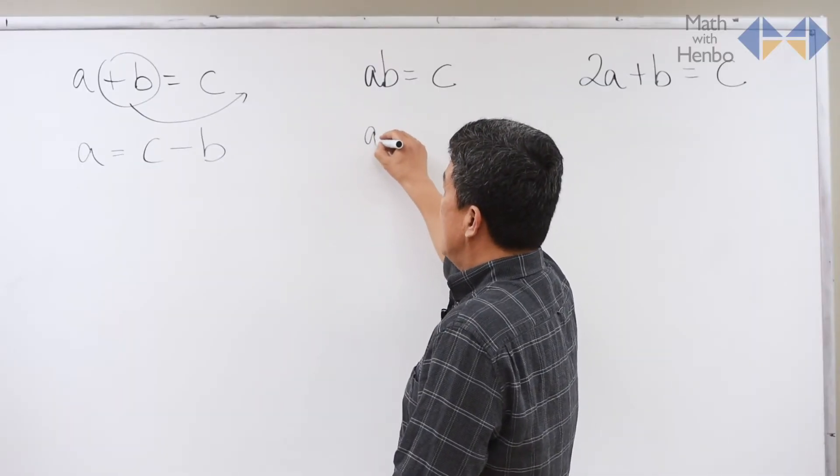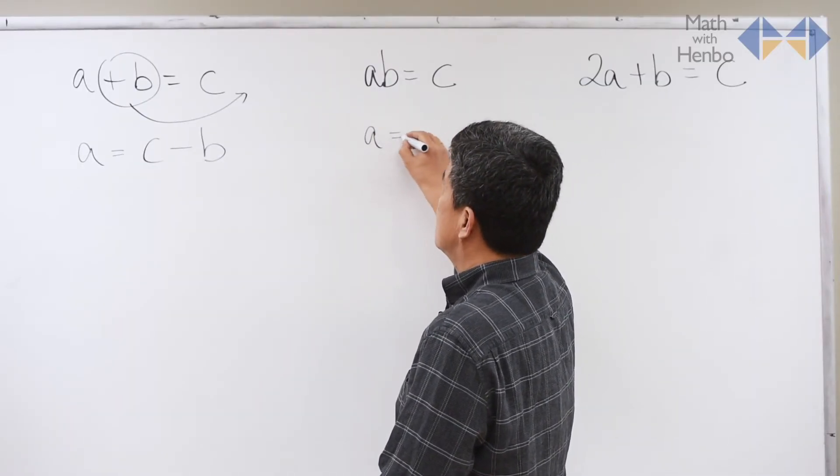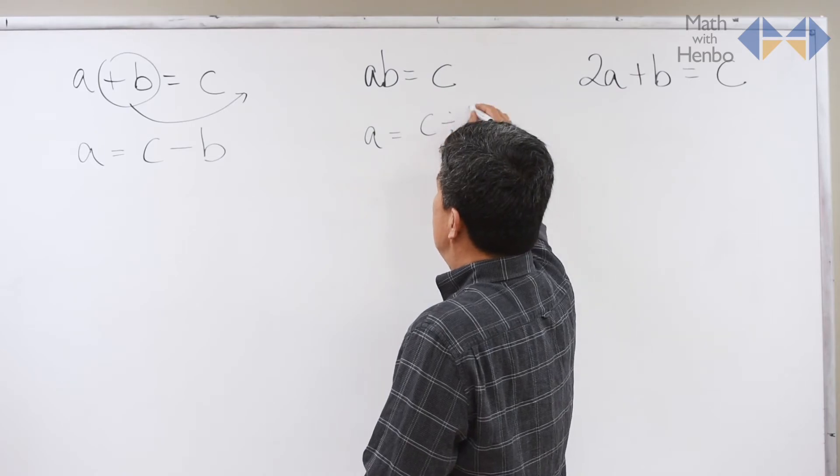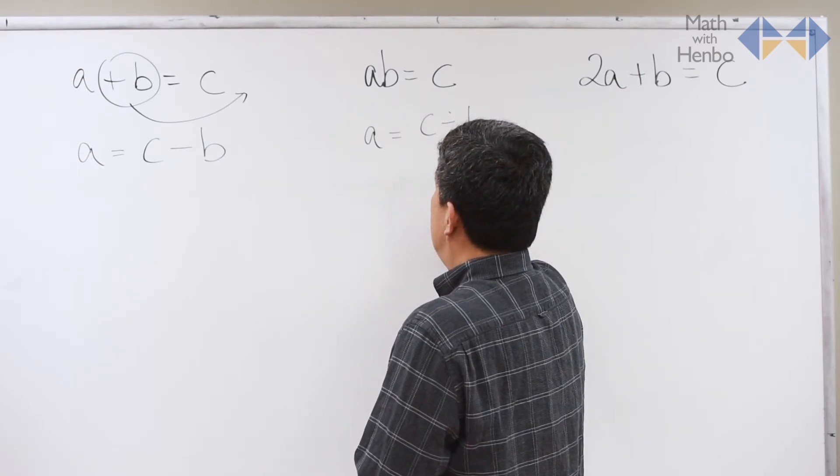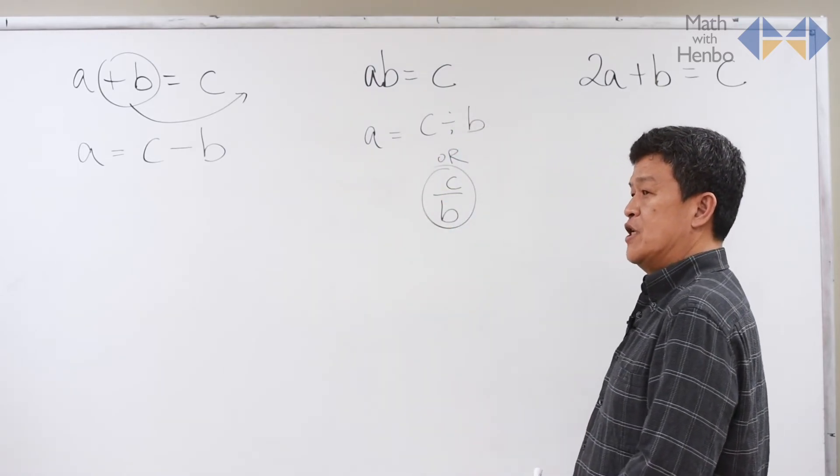In this case, A times B gave us C. So C divided by B or C over B becomes the answer for this one.